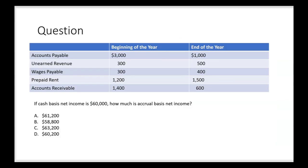Imagine you're taking the CPA exam and this question appears: if cash basis net income is $60,000, how much is accrual basis net income given the following information? To get this question right in the time allowed, you have to have a good basic understanding of cash to accrual revenue and expenses — you can't memorize your way through it. There are five different accounts that changed from beginning of the year to the end of the year, and we have to pick one at a time and determine the impact on net income of each one.